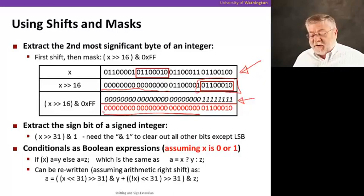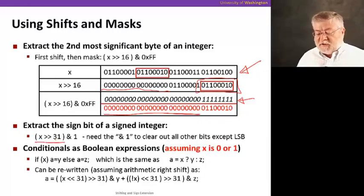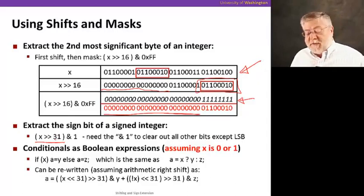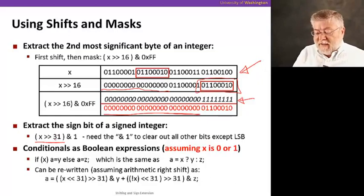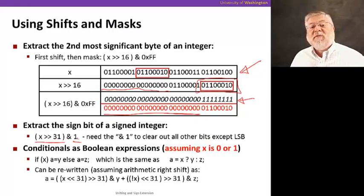We can also use shifting and masking to extract the sign bit of an integer. For example, if we just wanted to know if it was positive or negative. What we can do is take the signed integer x, shift it to the right by 31 bits, so that the signed bit ends up in the low order bit position, and then and it with the number one, which just has a one in that one position, the low order bit. And everything else will get cleared out to zero. So that's how we can extract the signed bit, and our result will either be zero if the signed bit was zero, or a one if the signed bit was one. And that makes it easy for us to test if that number was positive or negative.